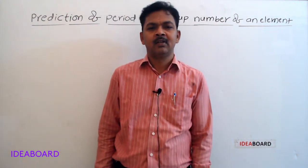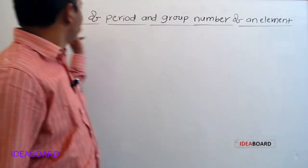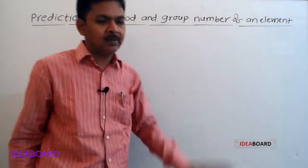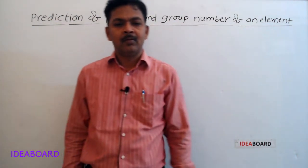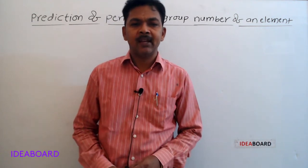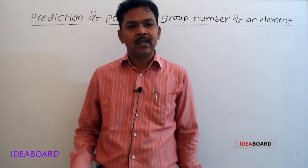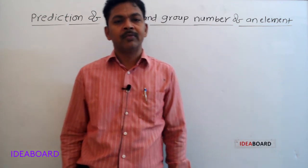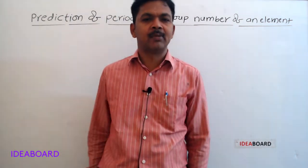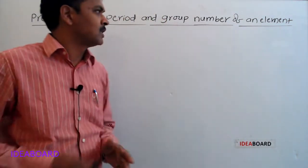My dear students, now I'm going to explain the prediction of period and group number of an element in the periodic table. For the given element, if the electronic configuration or atomic number is given, we can predict which period and which group it belongs to in the modern periodic table.